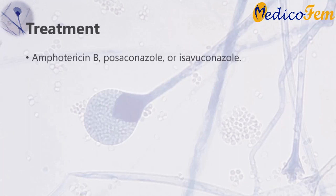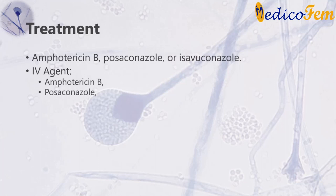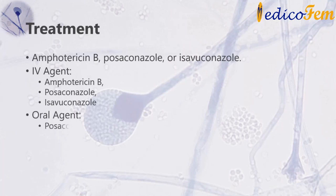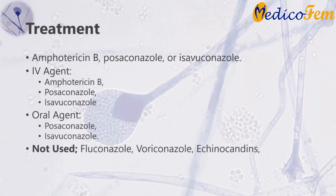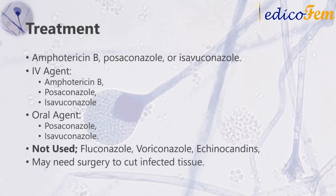Treatment: Mucormycosis is a serious infection and needs to be treated with prescription antifungal medicine, usually amphotericin B, posaconazole, or isavuconazole. These medicines are given through a vein (amphotericin B, posaconazole, isavuconazole) or by mouth (posaconazole, isavuconazole). Other medicines including fluconazole, voriconazole, and echinocandins do not work against fungi that cause mucormycosis.